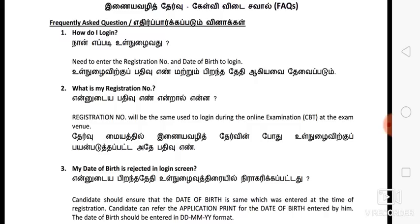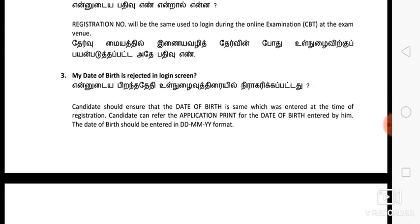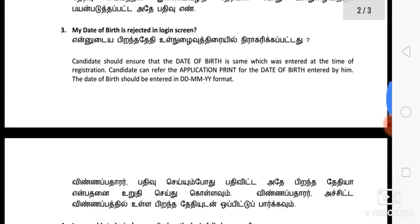If you need to apply, you can also get a mail. You can have a register number — it will be a register number for you. If you have to get the register number, you can find a login item. If you need to get a certificate and log in, you can get a login item in the format. You can take the date, month, and year directly.